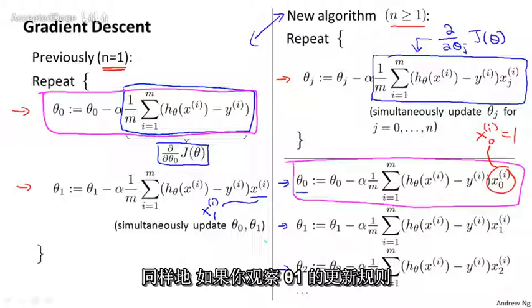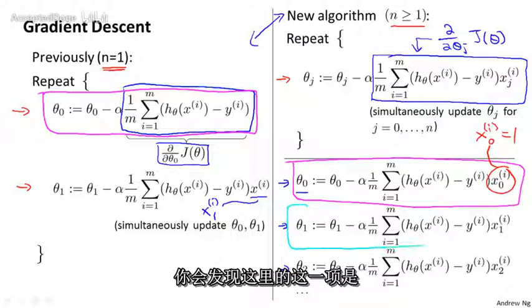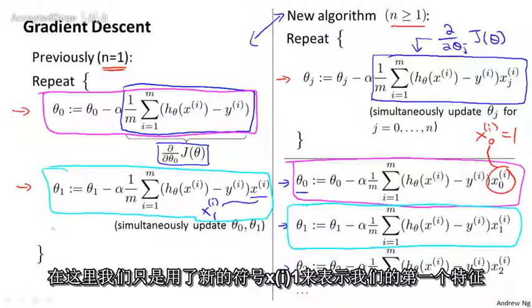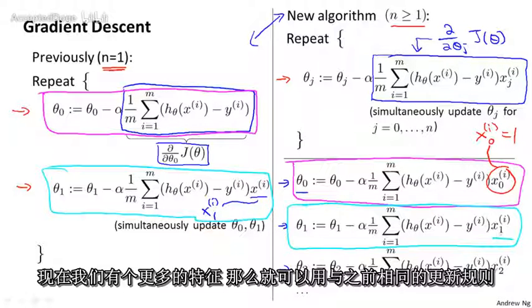Similarly, if you look at the update rule for theta 1, you find that this term here is equivalent to the term we previously had, or the equation, the update rule we previously had for theta 1, where, of course, we're just using this new notation x subscript 1 to denote our new notation for denoting the first feature.